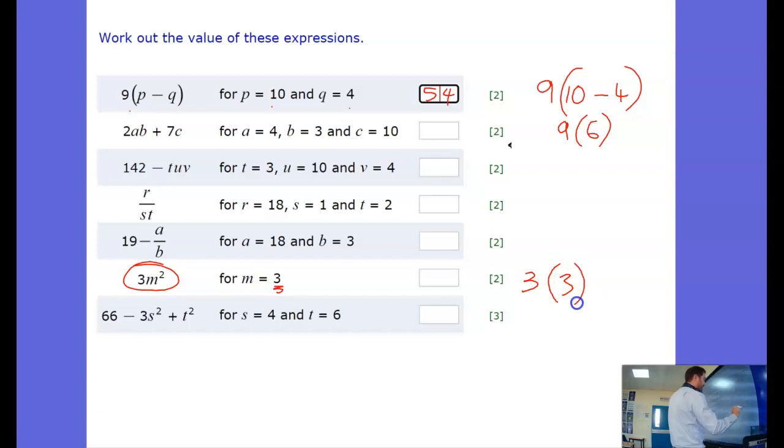Now m is 3, be very careful here this means 3 times 3 squared. BODMAS we do the brackets first, no brackets well it's a 3 in there, then the powers so we've got to do 3 squared. So we're going to do 3 multiplied by 3 squared is 9.